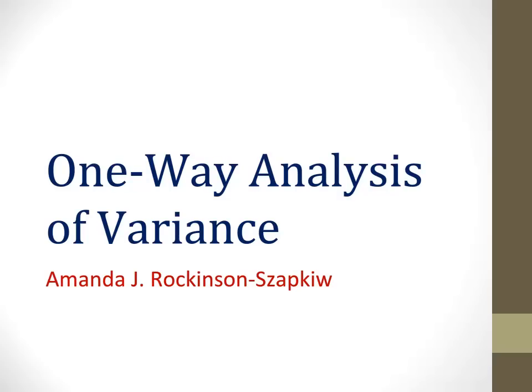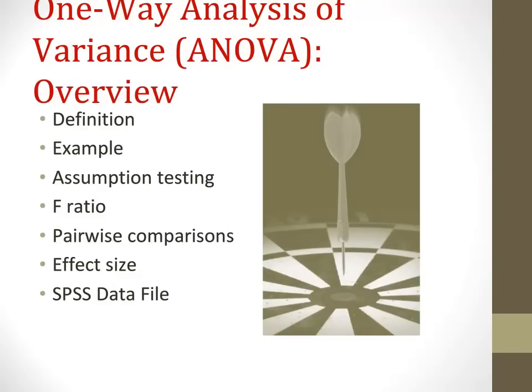Welcome to this tutorial on the one-way analysis of variance, or the ANOVA. This is Dr. Amanda Rockinson-Zabkew. During our time together, we are going to look at the definition of the ANOVA, when we can use the ANOVA, and examples of when a researcher may use an ANOVA. We will also talk about calculating the ANOVA, starting with assumption testing, moving on to the F-ratio, then to the pairwise comparisons, and then the effect size. Finally, we'll discuss how to report an ANOVA in an APA results section and also look at how to set up an SPSS data file.